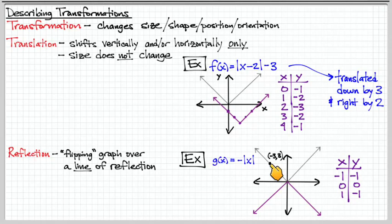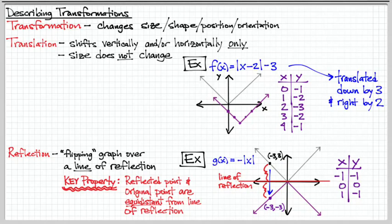If we examine a specific plot point, for example, this point negative three, three - when we now put a negative sign in front of the function, the y value comes down instead to negative three. We have this point negative three comma negative three. The line of reflection for this case is the x-axis. A key property of reflections is that the reflected point is going to be equidistant from the line of reflection. The distance from this point to the line of reflection is three units away, and this reflected point is also three units away from the line of reflection.